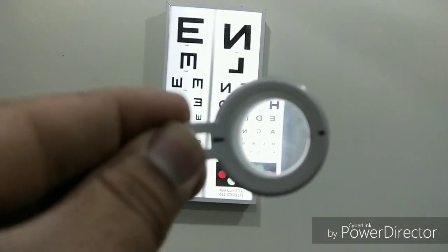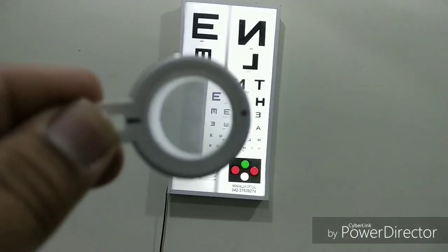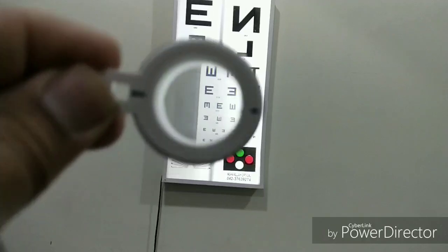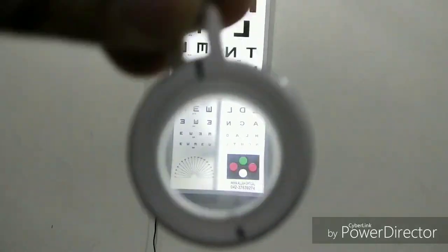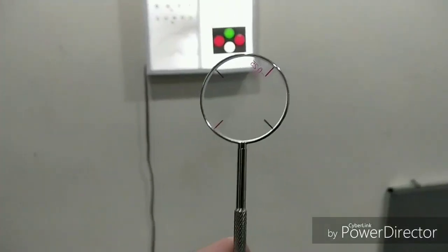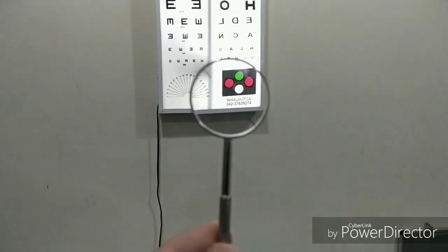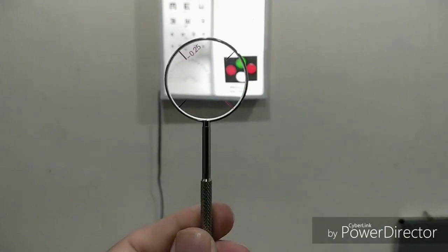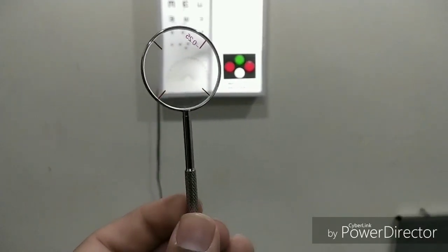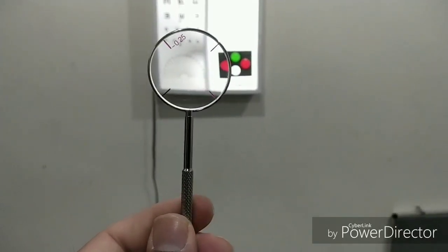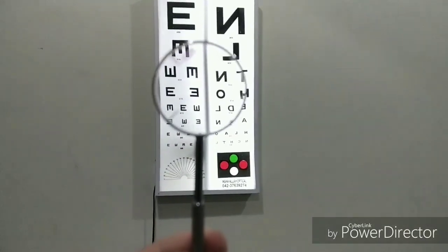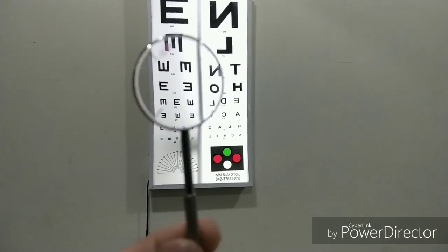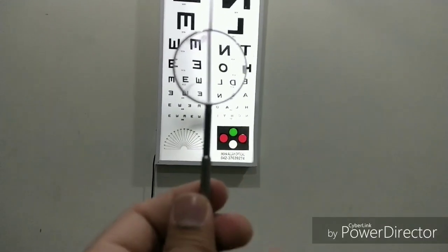They displace the image towards the base. Prismatic effect can also be achieved by moving the center of the spectacle lens off the visual axis. Now, this is the cross cylinder, Jacksonian cross cylinder. It is used to fine-tune the axis and power of the already determined astigmatic lens. The sphere in cross cylinder is double and of opposite power to the cylinder.